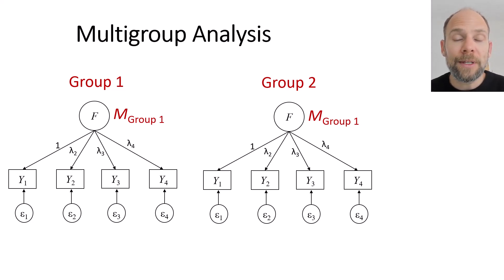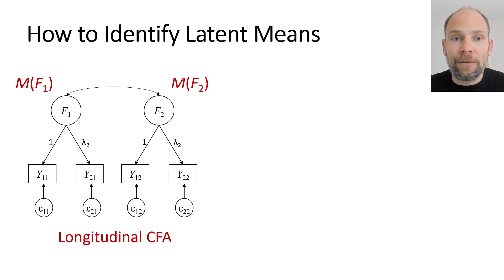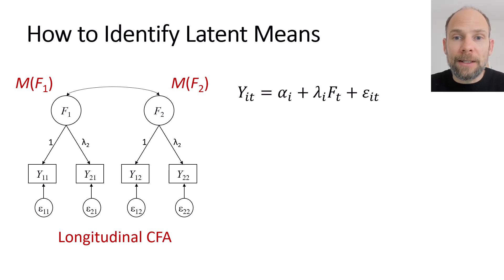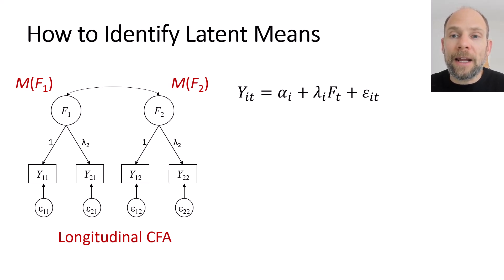How do we technically identify latent means? It's not totally trivial. In the longitudinal CFA example, the measurement equation for a congeneric factor model for variable y_it — where i indicates the indicator and t indicates the time point — includes an intercept alpha_i, a factor loading lambda_i times the factor f_t (which is time-specific), and an error variable epsilon_it reflecting measurement error and specific variable influences not shared with the other indicators.